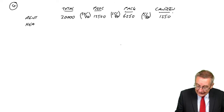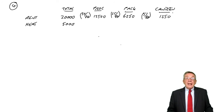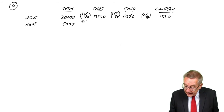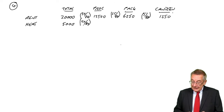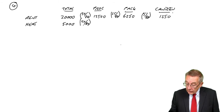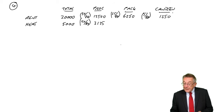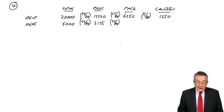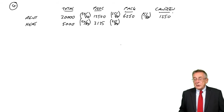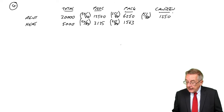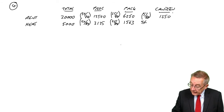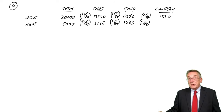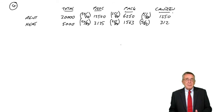Next is heat, totalling 5,000. Again, the most sensible basis is space. So processing gets 50/80ths, which is 3,125; packing gets 25/80ths, which is 1,563 (rounding to the nearest dollar); and canteen gets 5/80ths, which is 312. We're not concerned about rounding by a dollar or two.